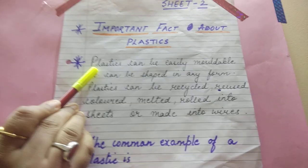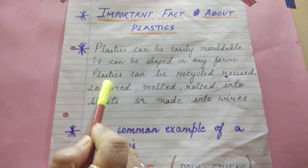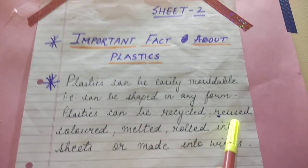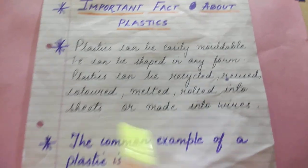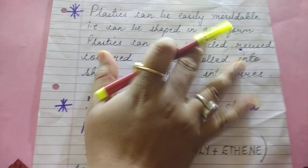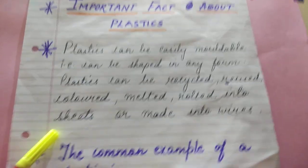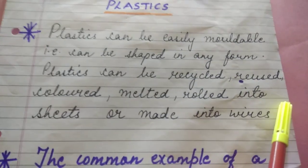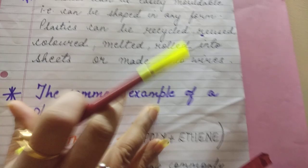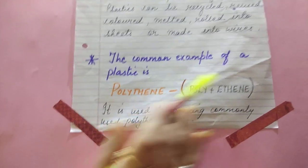Now here is an important general fact about plastics. Plastics can be easily molded — shaped in any form. Plastics can be recycled, reused, colored, melted, rolled into sheets, or made into wires. These characteristics are found in all types of plastics. If asked what characteristics plastics have, these are the key points.